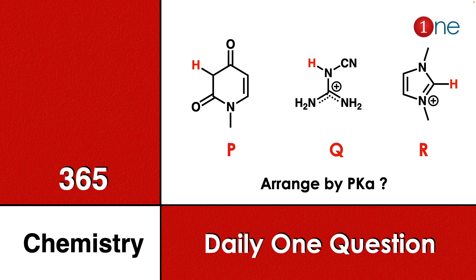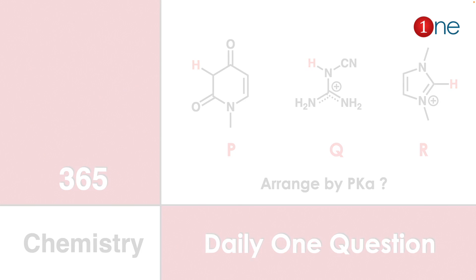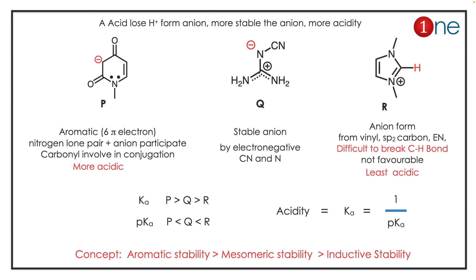You have to find which one is more acidic and arrange them by pKa value. The concept is: the more a compound can donate H⁺ and form a stable anion, the more acidic it is.